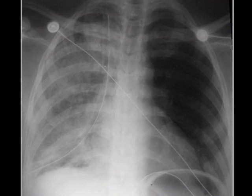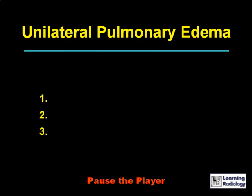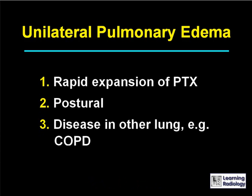Here's the next differential. The differential is unilateral pulmonary edema. There are three causes. The causes of unilateral pulmonary edema include rapid expansion of a pneumothorax or rapid withdrawal of fluid from a pleural effusion, postural causes, or disease in the other lung, for example chronic obstructive pulmonary disease.